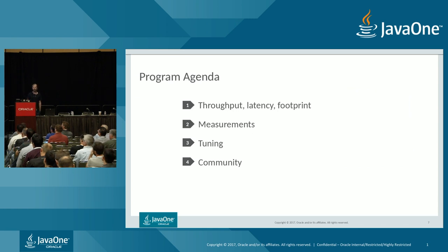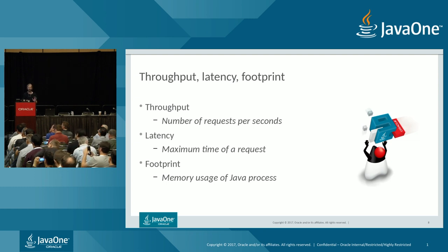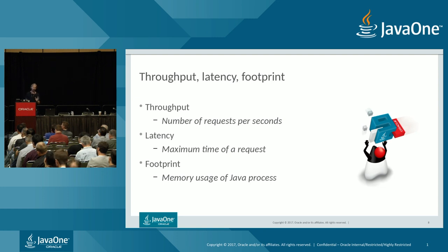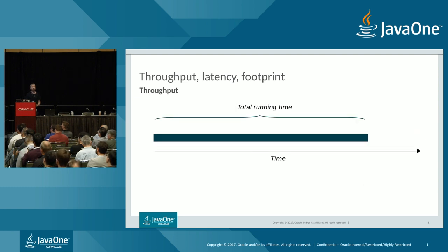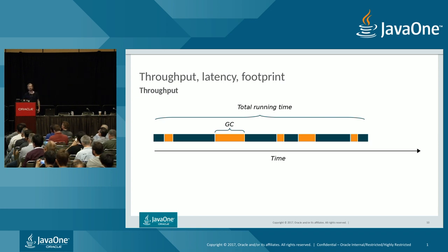Throughput, latency, and footprint are three important properties. Throughput is the number of requests per second — for a web server or backend service, how many requests you can handle per second. Latency is the maximum time for a request. Footprint is the memory usage of a Java process. For throughput, we measure the total running time of the Java process, and different GCs contribute differently — some collectors pause the application, and those pauses contribute to total running time.